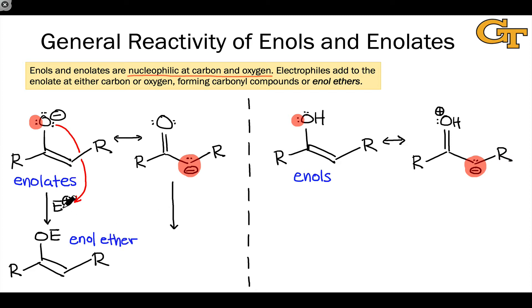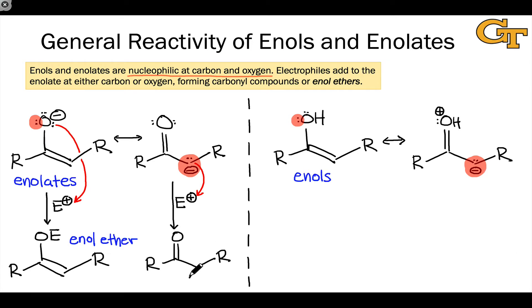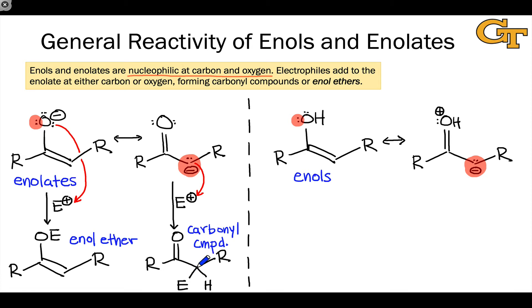That's one possibility involving formation of an O–E bond. However, the alpha carbon can also act as a nucleophile. When this occurs, a new bond is formed between the alpha carbon and the electrophile. The resulting product contains a carbon–oxygen double bond and a new bond between the alpha carbon and the electrophile — simply a substituted carbonyl compound. Generally, we're more interested in this kind of reactivity because if the electrophile is carbon, this results in the formation of a carbon–carbon bond.